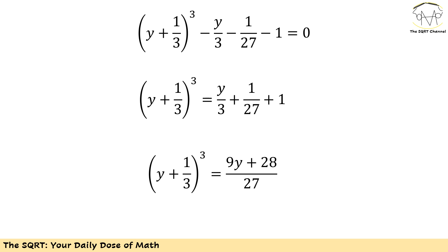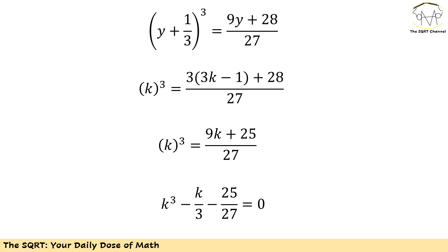I move the cubic power to the left hand side and everything else to the right hand side, then simplify. I end up with (y + 1/3)³ equals (9y + 28) over 27. Now to solve this, I replace y + 1/3 with k. On the left hand side I have k³, and instead of y I use 3k minus 1. After simplification, I end up with k³ minus k/3 minus 25/27 equals 0.